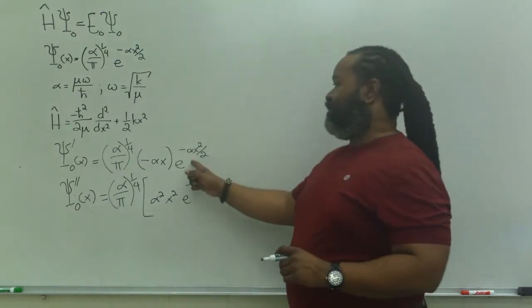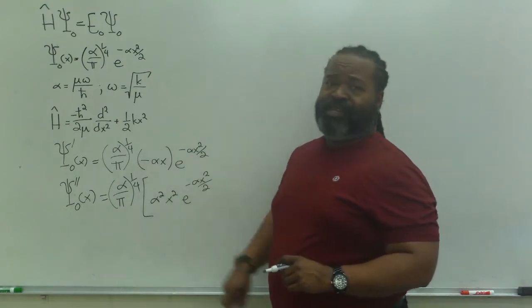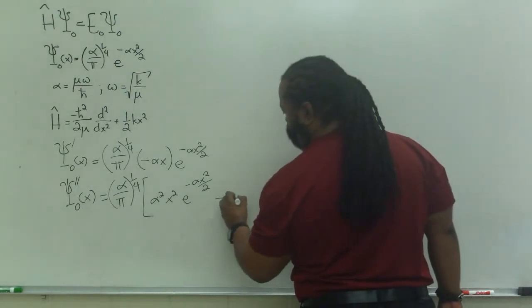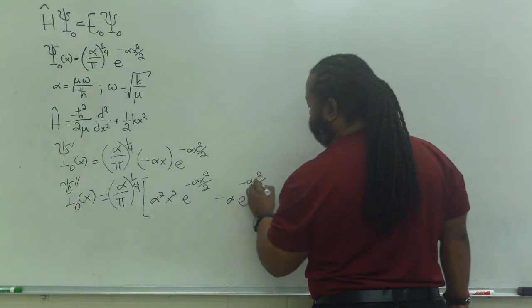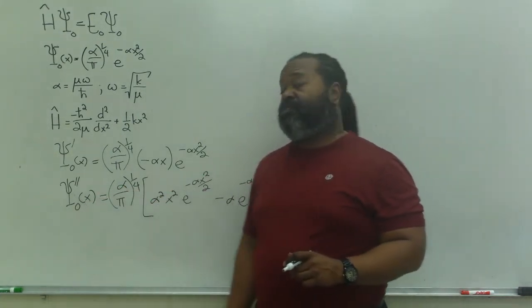And then, I need the second times the derivative of the first. Well, this minus alpha x is just going to give me a minus alpha. This e to the minus alpha x squared over 2. So, now that I have the second derivative of the wave function, I know I can plug that back in.